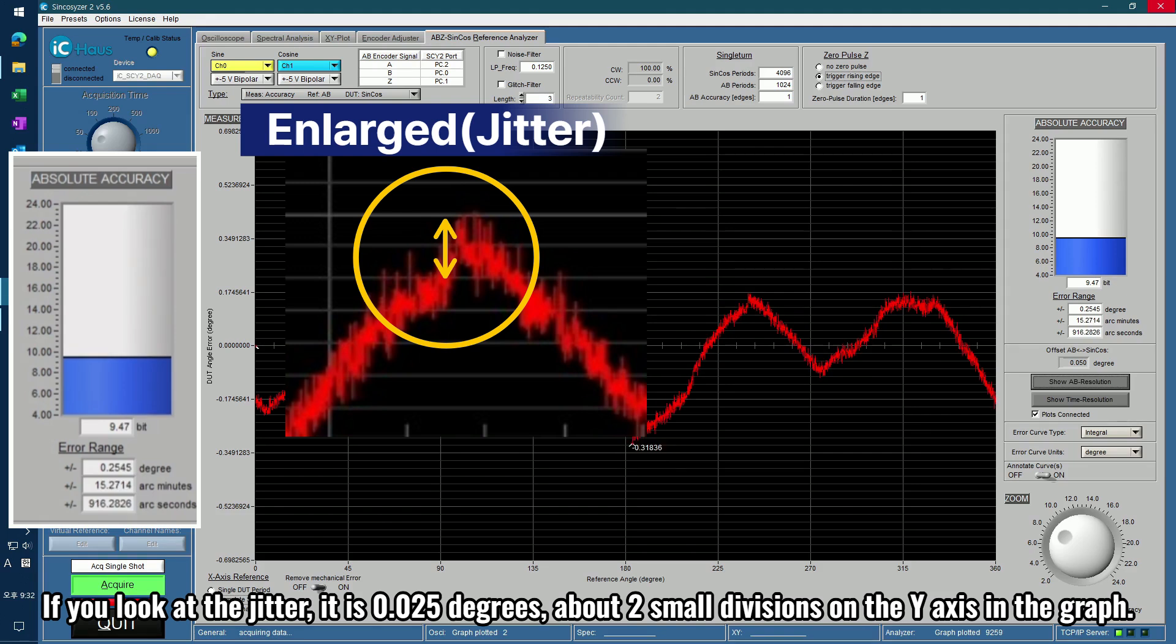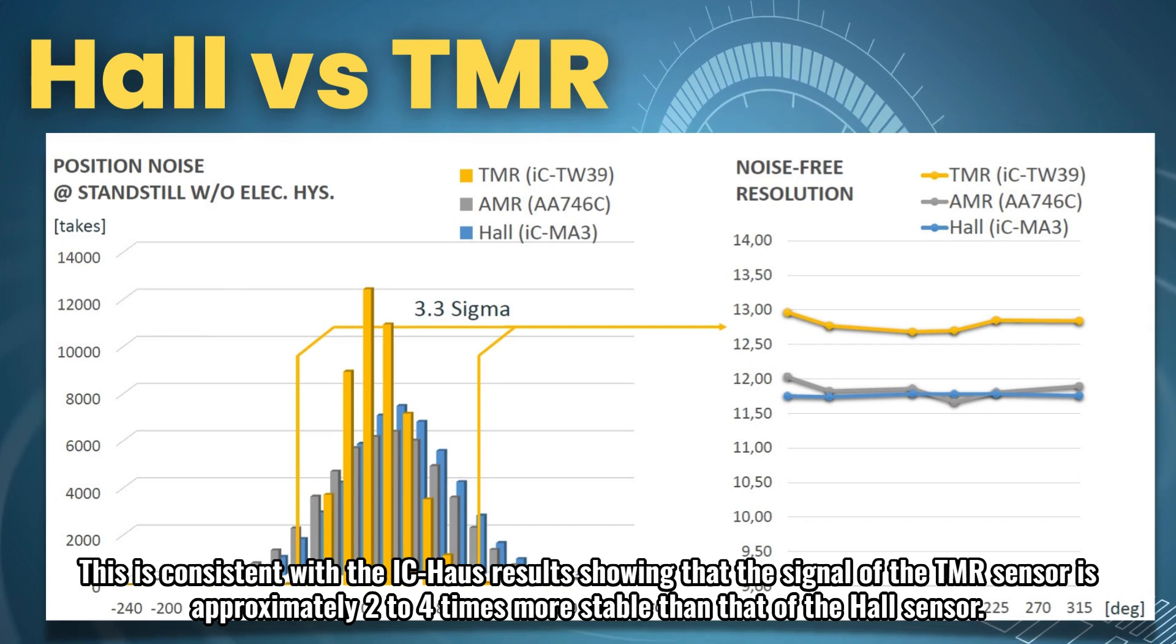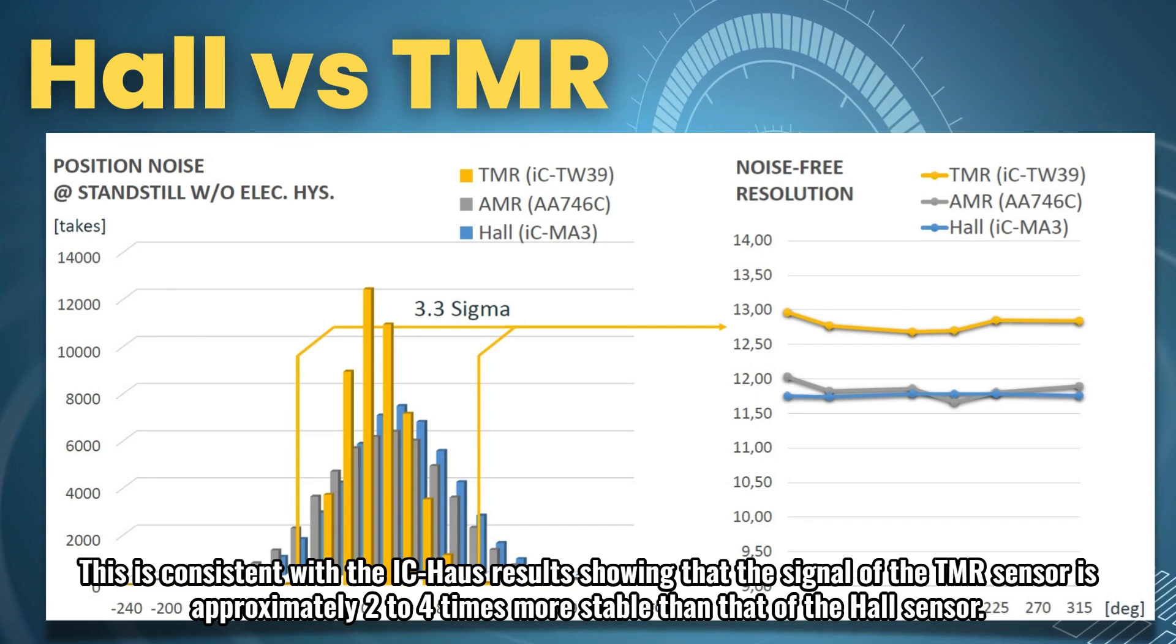If you look at the jitter, it is 0.025 degrees, about two small divisions on the y-axis in the graph. This is consistent with the IC house results showing that the signal of the TMR sensor is approximately 2 to 4 times more stable than that of the Hall sensor.